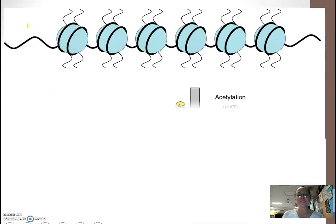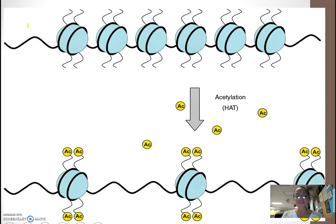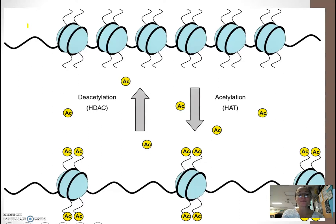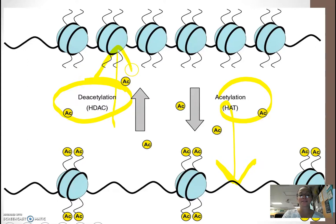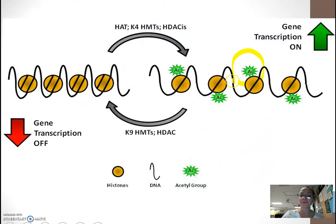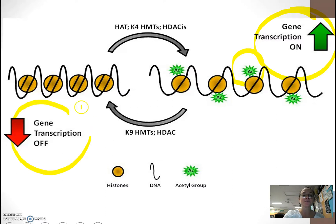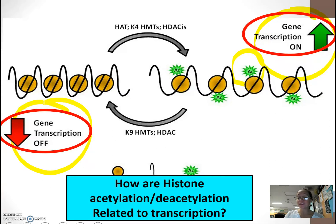Here you have chromatin. When you add acetyl groups, we can see it's been stretched out into euchromatin. When you take off the acetyl groups — deacetylation — you go back to heterochromatin. Acetylation is adding acetyl groups and deacetylation is removing them. When acetyl groups are added, gene expression is turned on; when they are removed, gene expression is turned off.